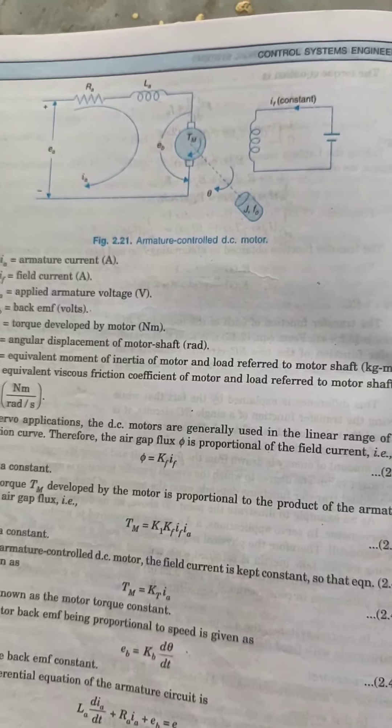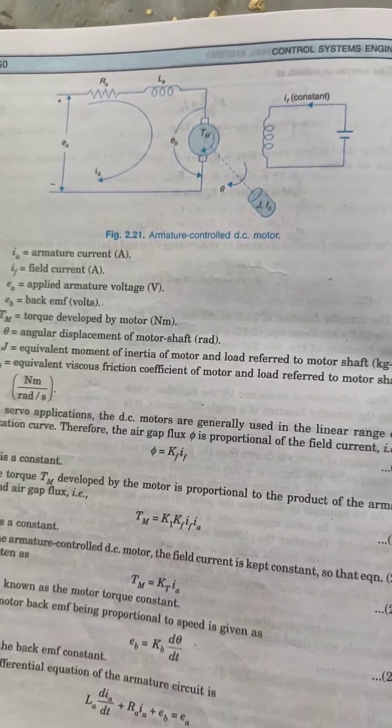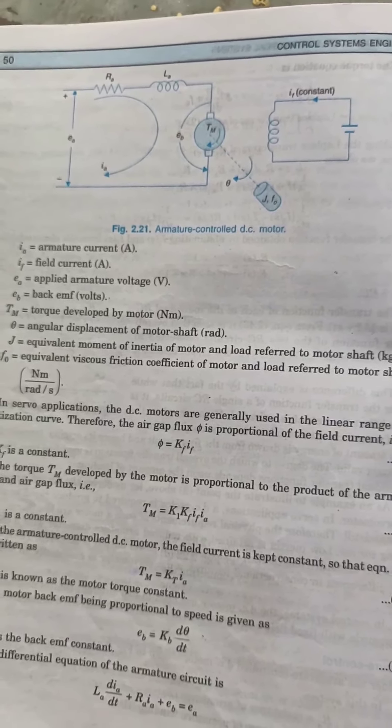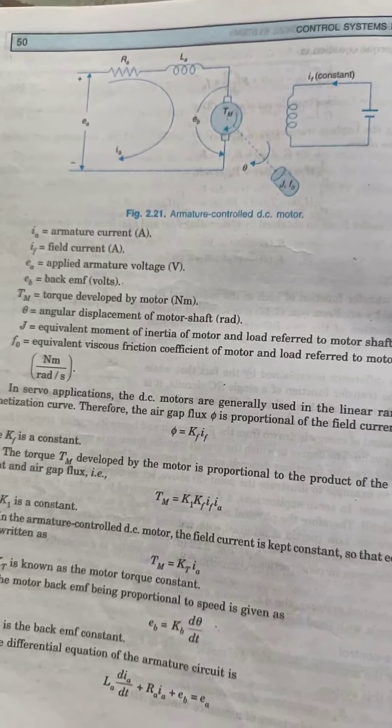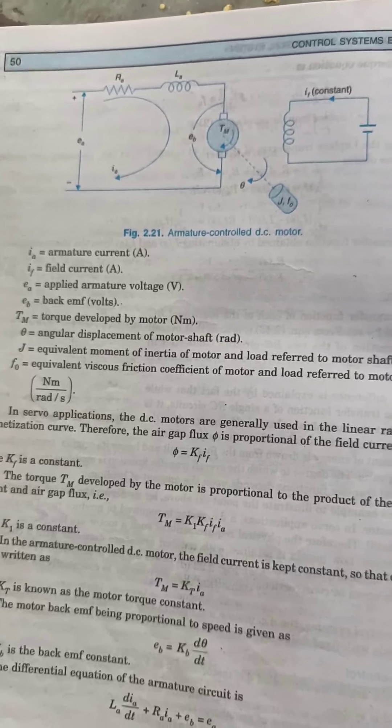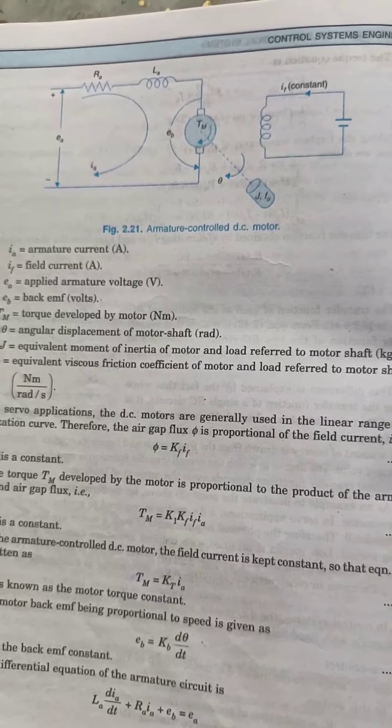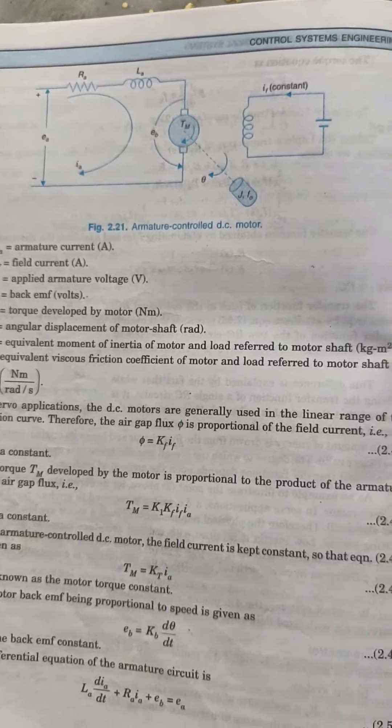Basically, DC servo motor is generally used for operation of various control valves or various instrumentation control in process industry. This DC servo motor can be controlled by two ways.